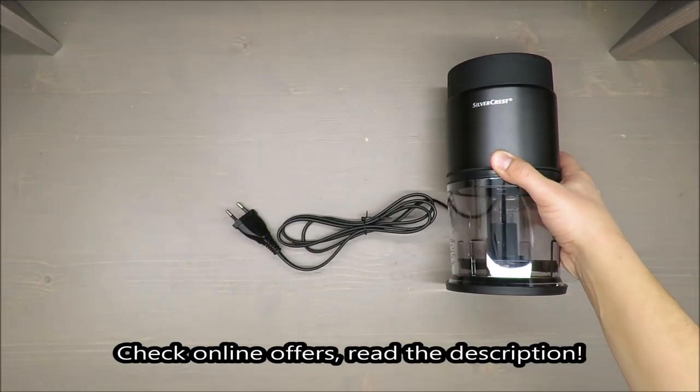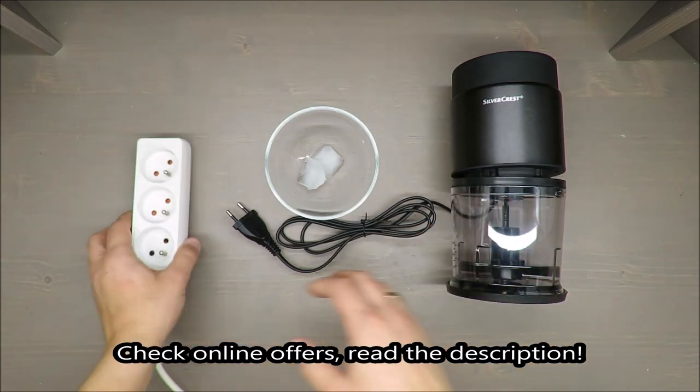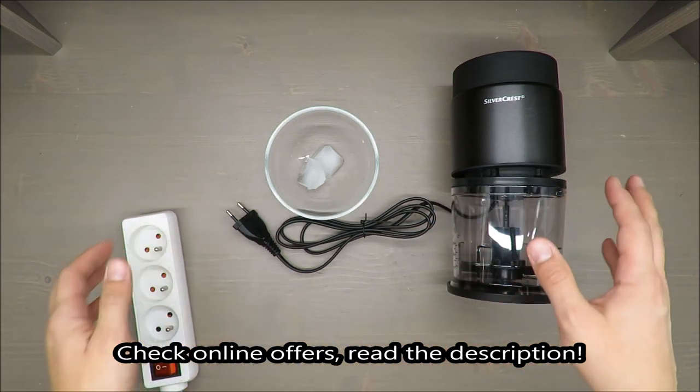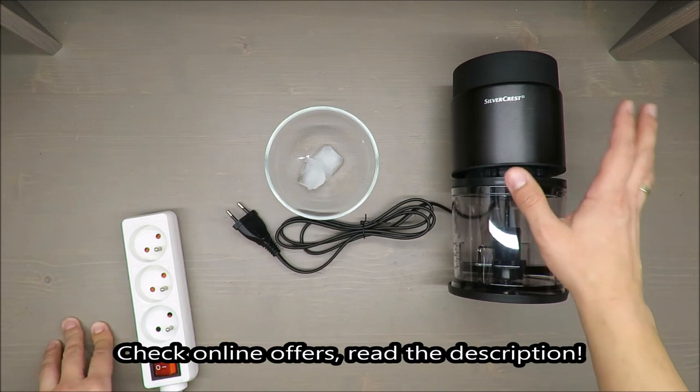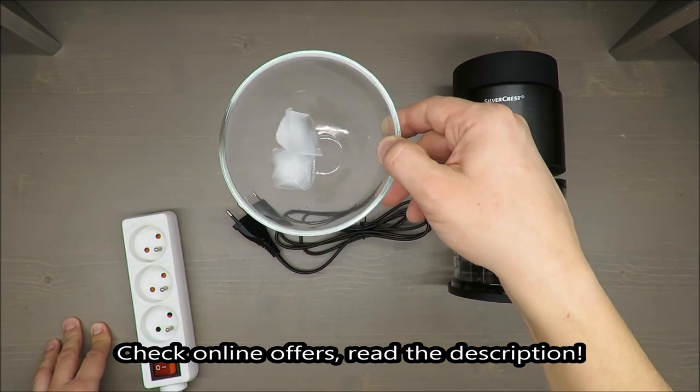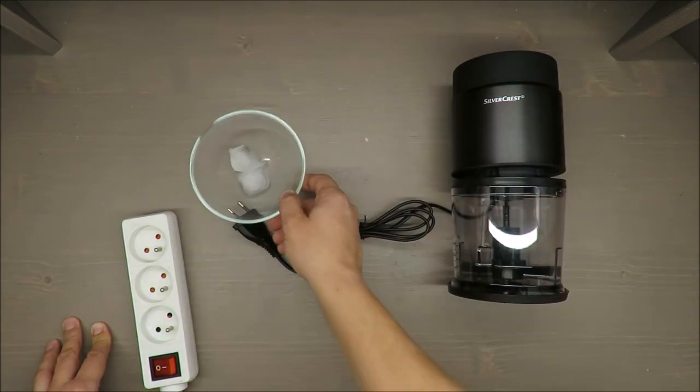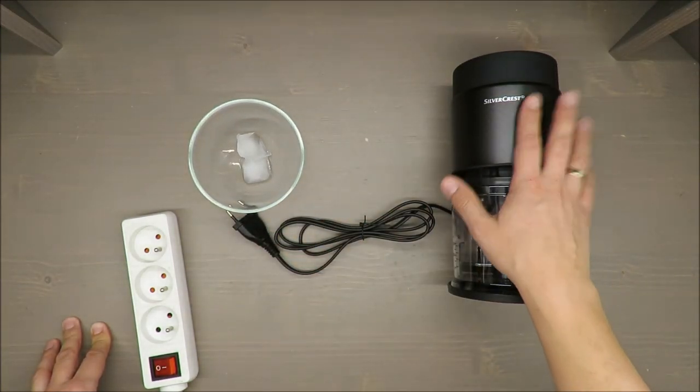Hello everybody, this is Out of the Box unboxing, and in today's episode I'm going to review for you a mini chopper from Silvercrest, available in Lidl. As it has an ice crushing function, I will try to blend these two ice cubes.